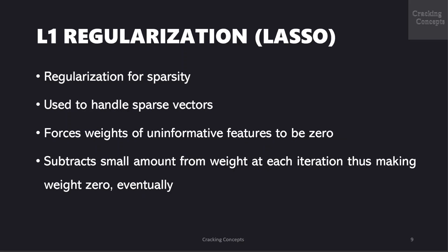Now we look into L1 regularization also known as lasso regression. It is also called regularization for sparsity. As the name suggests it is used to handle sparse vectors. If we have a high dimensional feature vector space the model becomes very difficult to handle. L1 regularization forces the weights of uninformative features to be zero. So it acts like a force that subtracts a small amount from the weight at each iteration and thus making the weight zero eventually.